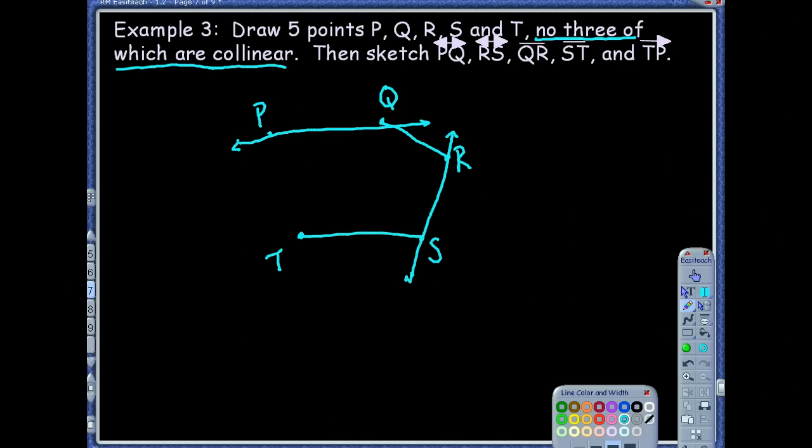And then TP is a ray. But notice, what does it have to start with? The initial point's T, so you've got to start at T and it's got to go past point Q. So we're going to draw a little arrow past that point. Point P. Yeah. Perfect.